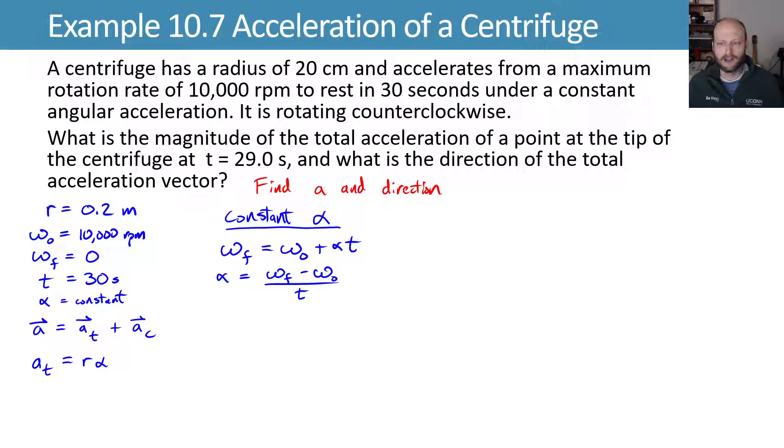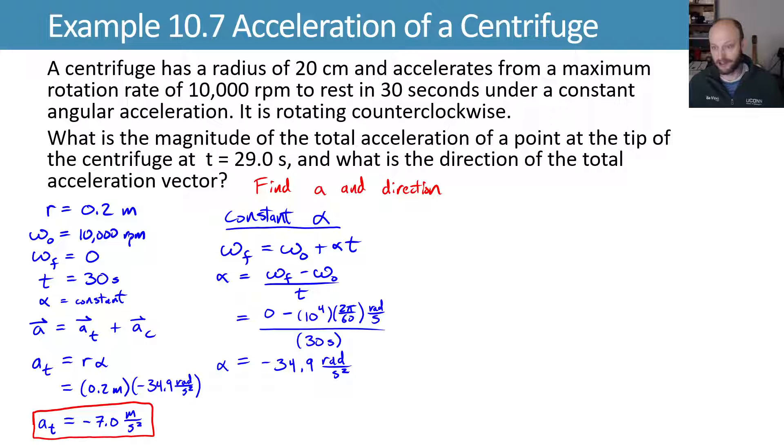And then we can plug in our values with a unit conversion of 2 pi over 60 to get from revolutions per minute into radians per second. Evaluating this, we get an alpha of negative 34.9 radians per second squared. Now we can plug this in to get our tangential component of the acceleration, combining our radius of 0.2 meters with our angular acceleration of negative 34.9 radians per second squared. We multiply those and get negative 7 meters per second squared.